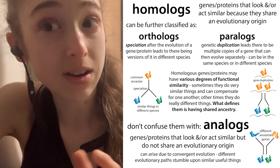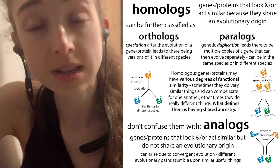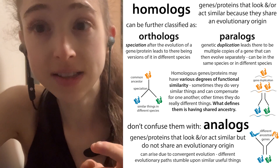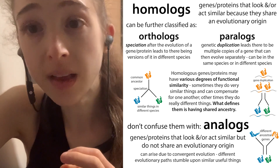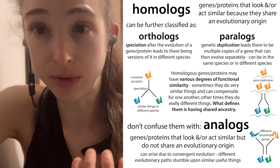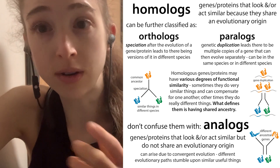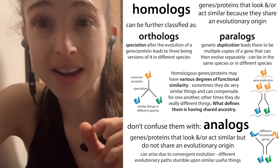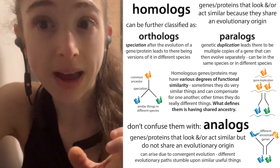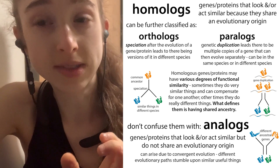Then what we typically talk about when we're talking about different species are orthologues. Orthologues are homologues that share a common ancestor and then underwent a speciation event — the creation of two new species. So basically this protein evolved, and then the species split apart, and so they both have the gene for making that protein, and now those can evolve separately.